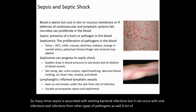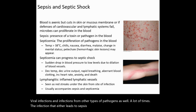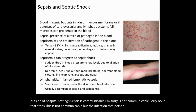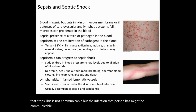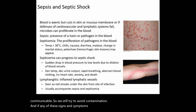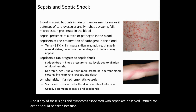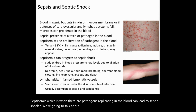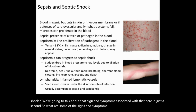A lot of times the infection that leads to sepsis, or actual sepsis itself, occurs outside of hospital settings. Sepsis is not communicable, but the infection the person has might be communicable, so we still try to avoid contamination. If any of the signs and symptoms associated with sepsis are observed, immediate action should be taken, because septicemia — which is when there are pathogens replicating in the blood — can lead to septic shock. Let's talk about the signs and symptoms of sepsis and septicemia.